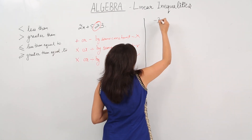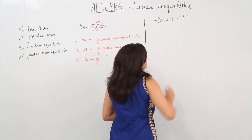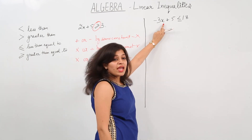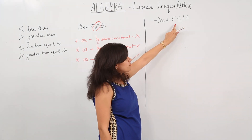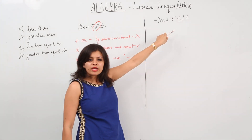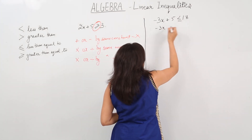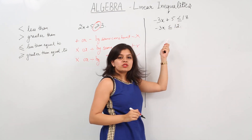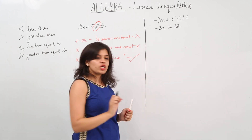Let's say we have the equation minus 3x plus 5 is less than or equal to 17. We need to find the range of values of x. First, we subtract both sides by 5, giving us minus 3x is less than or equal to 12. Now we divide both sides by 3, which is a positive constant, so the inequality sign does not change.